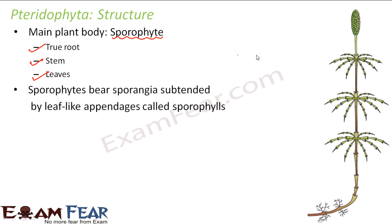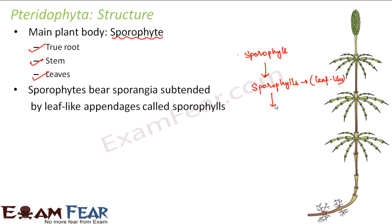To understand the structure clearly: the sporophyte is the plant which you actually see. This sporophyte has leaf-like structures known as sporophylls. These sporophylls enclose inside them a structure known as sporangia, and the sporangia contains the spores. So the ferns or Pteridophytes we see are all sporophytes, and somewhere inside their body — inside the sporangia — they have spores. The leaves are known as sporophylls.